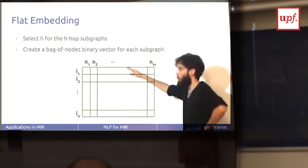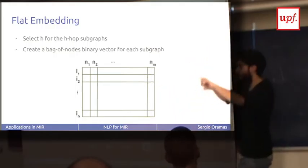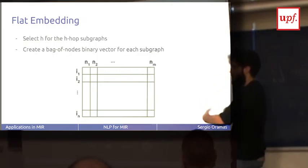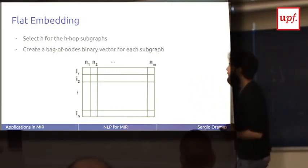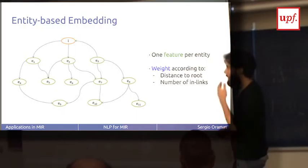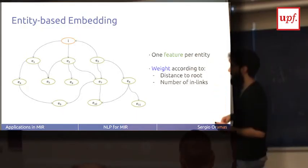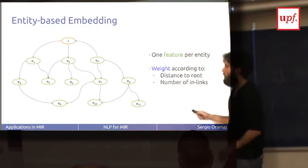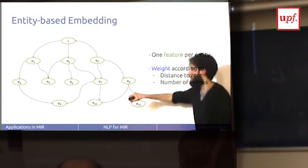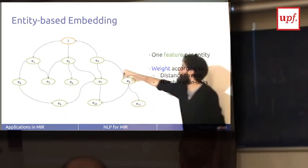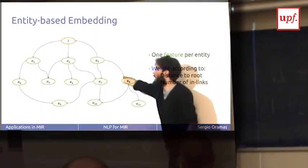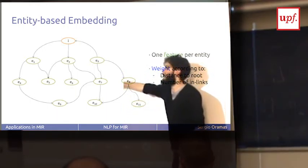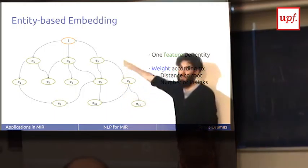There's no one fixed way. We are going to explain three ways that we have used in our approaches. First, the flat embedding is the most straightforward way and it works pretty well. The application is: instead of bag-of-words, a bag of nodes. We have the graph, and each node in the graph has a feature in our feature matrix. Every item has a score based on whether it has this node in its neighborhood subgraph.